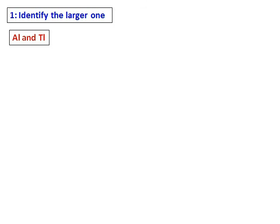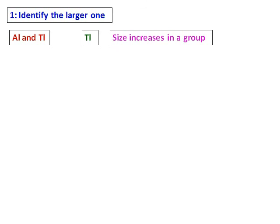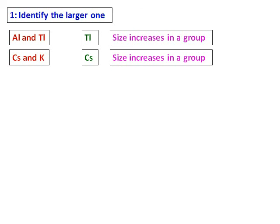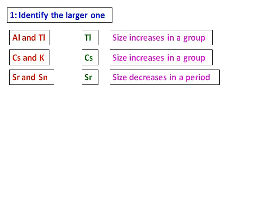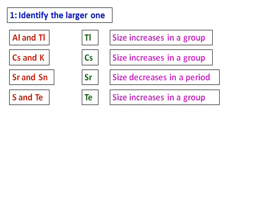Let's do some practice questions — identify the larger one. Aluminum and tellurium: the larger one is tellurium, as they belong to the same group and size increases in a group. Cesium and potassium also belong to the same group, so the larger one is cesium. Strontium and tin belong to the same period, and since size decreases in a period, strontium is larger. Between sulfur and tellurium, they belong to the same group, so tellurium is larger.